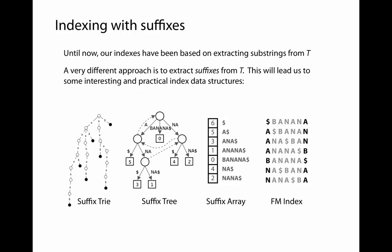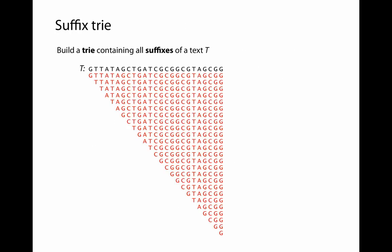We're going to start by talking about the suffix trie. The suffix trie is not itself a very practical data structure, but it's going to help us think about the other data structures. To build a suffix trie, all we need to do is build a trie containing all of the suffixes of our text T. If T is of length M, then the total number of characters in all suffixes of T is M times (M+1) over 2 — it grows with M squared.